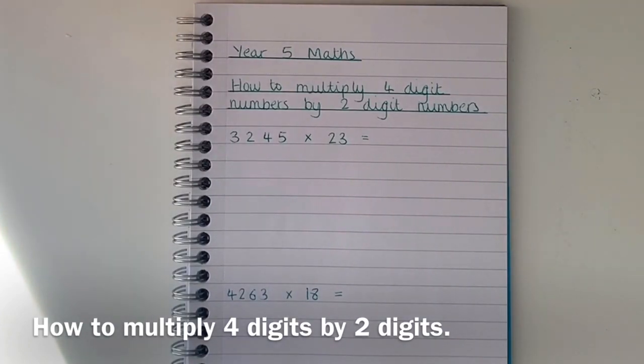Good morning Year 5. I hope you're all okay and had a really good half term. It's Miss Pugh here and I'm going to show you today how to multiply four digit numbers by two digit numbers in maths.